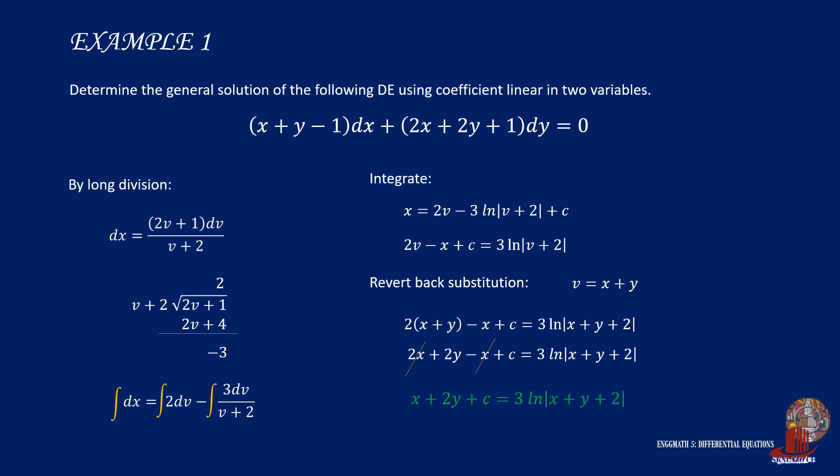Now we are ready to revert back the substitution we did earlier with v equal to x plus y. Plug x plus y in all v's to have the next equation. And this can be simplified to x plus 2y plus c is equal to 3 times the natural logarithm of x plus y plus 2.